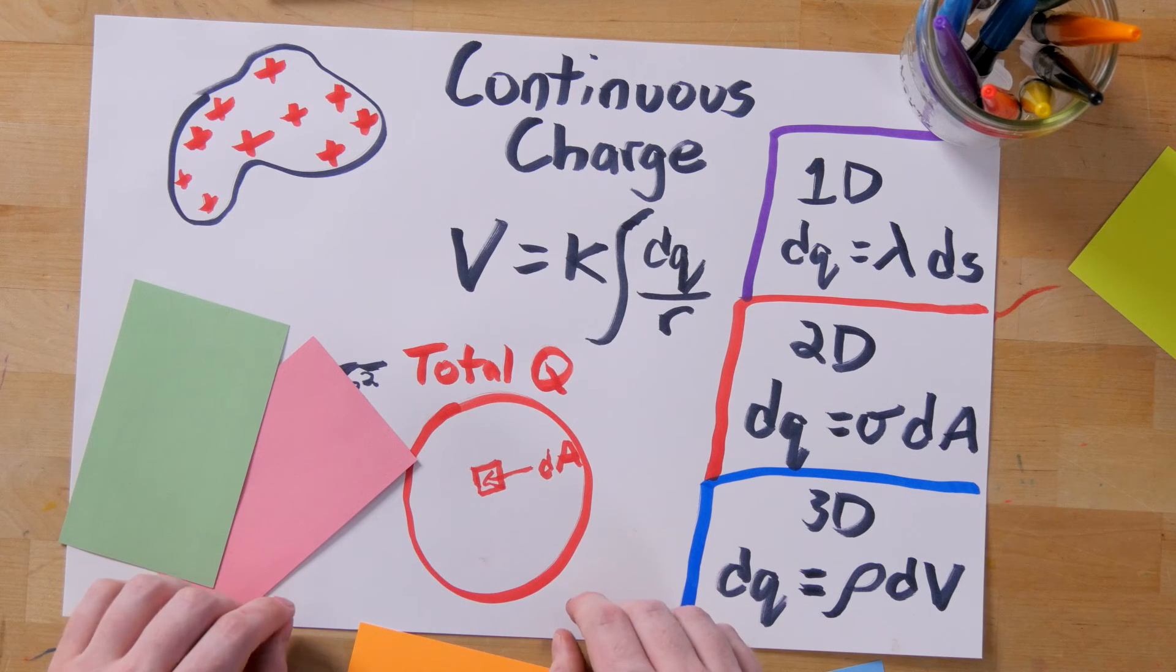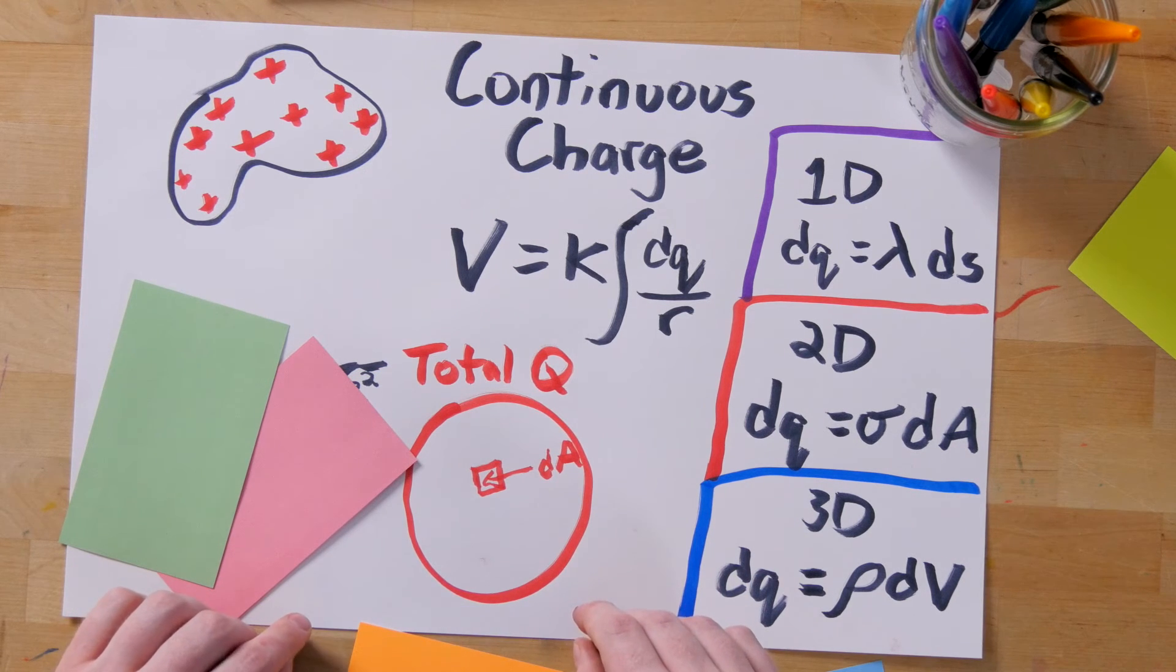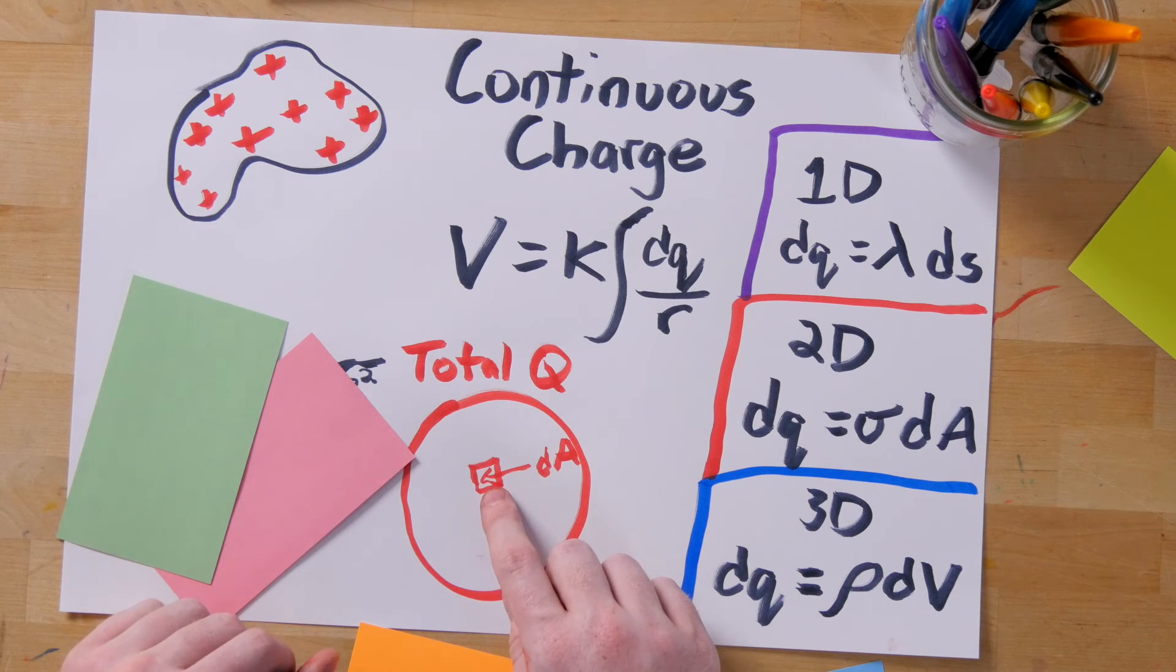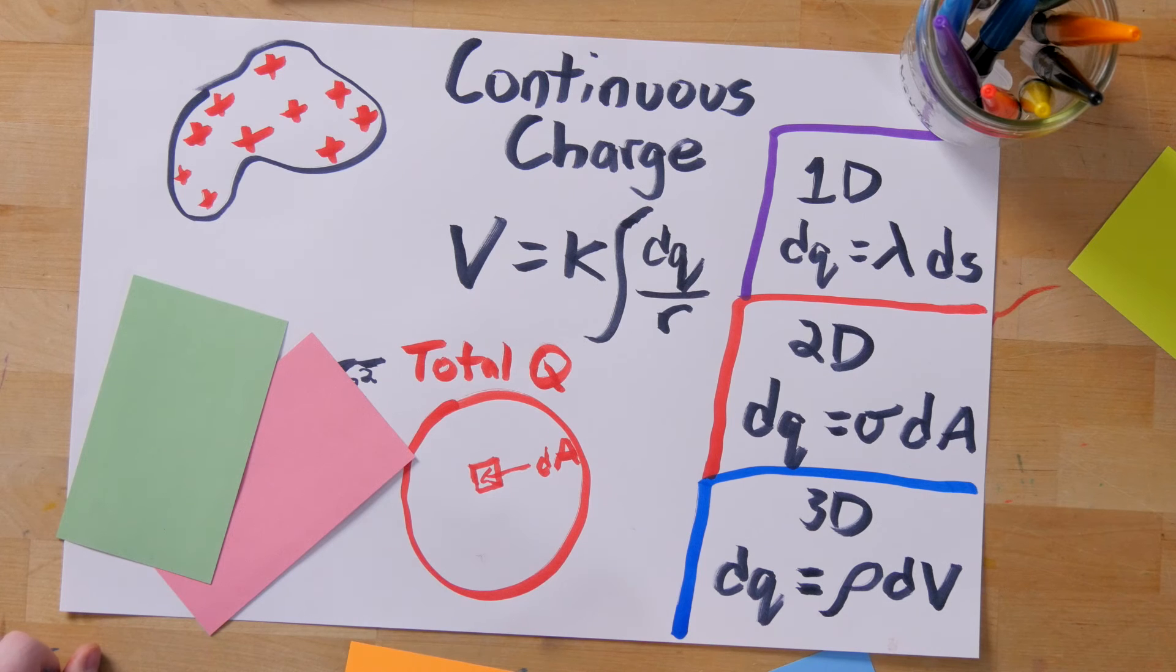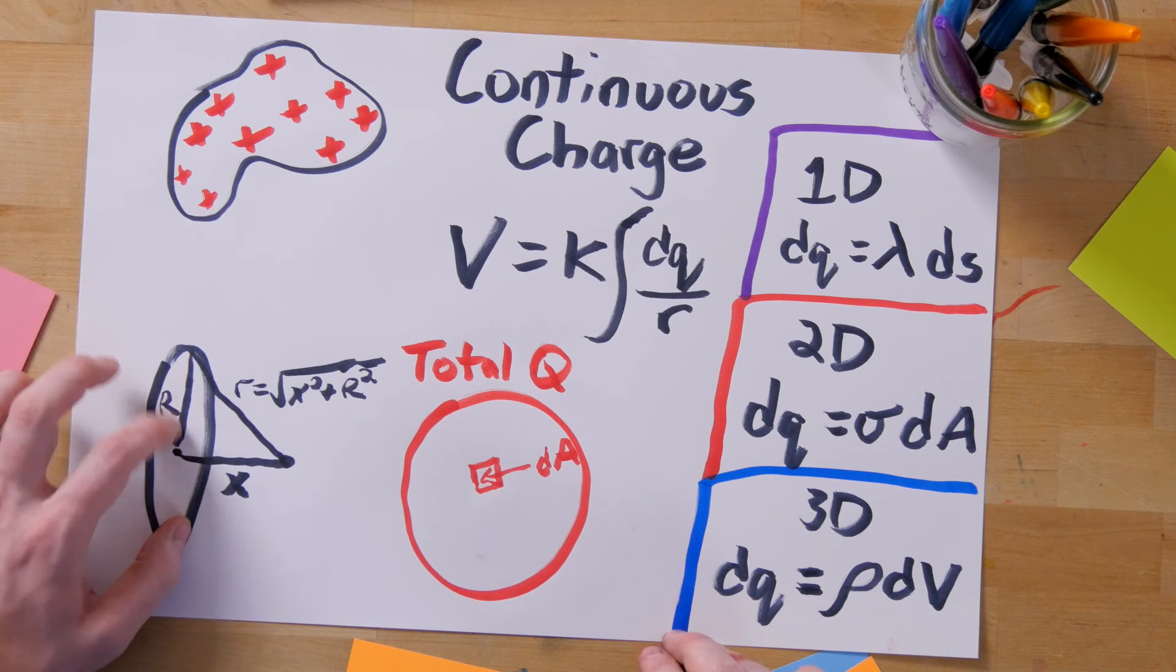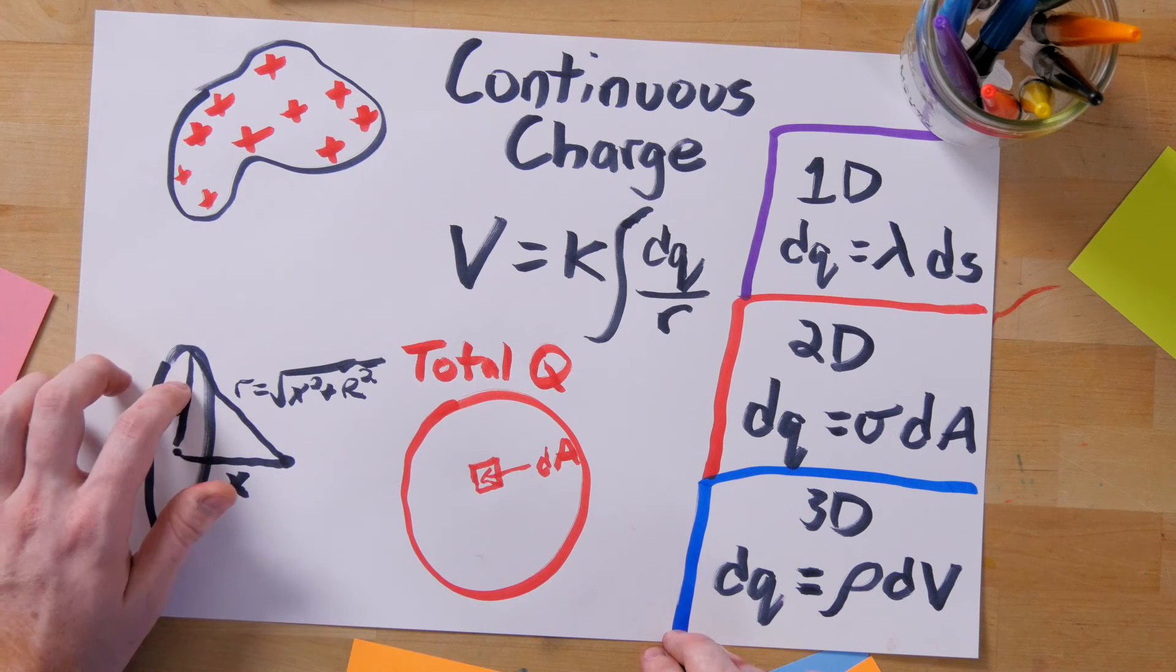For example, the small amount of charge on a flat disk would be sigma times dA, the small bit of area it occupies. Once you have that, you need to find out how far your point is from every little dq. Often, this will be either related to the radius of your circle and or measurable through the Pythagorean theorem.